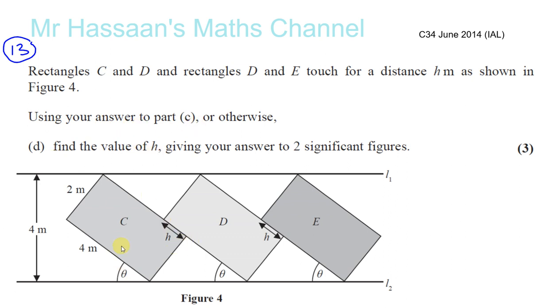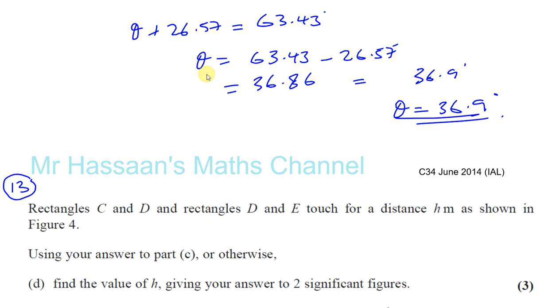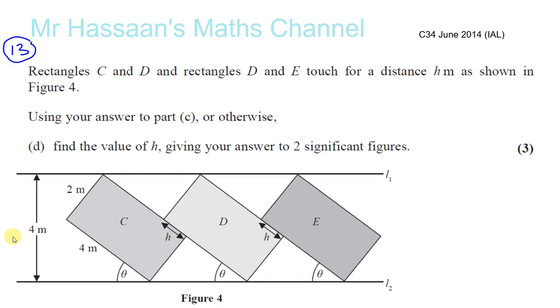We already found what theta was. Before we found it was 36.86 to two decimal places. So we know that theta is 36.86 degrees.